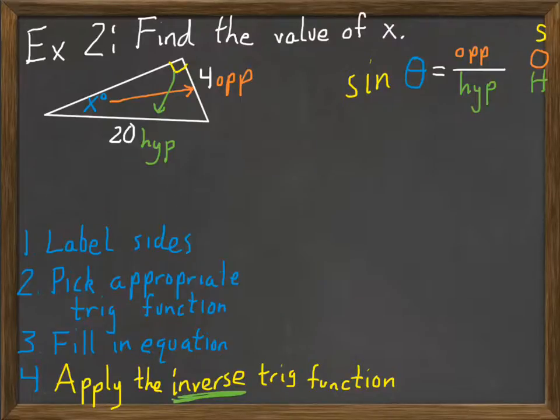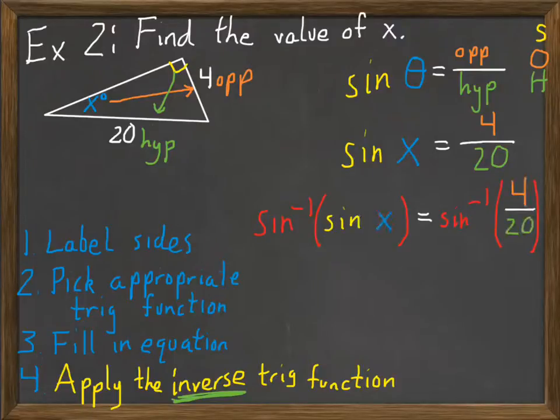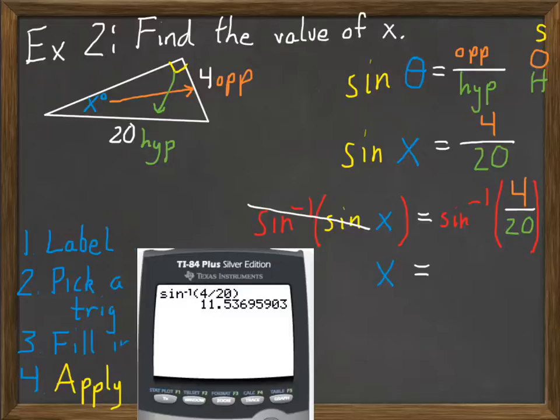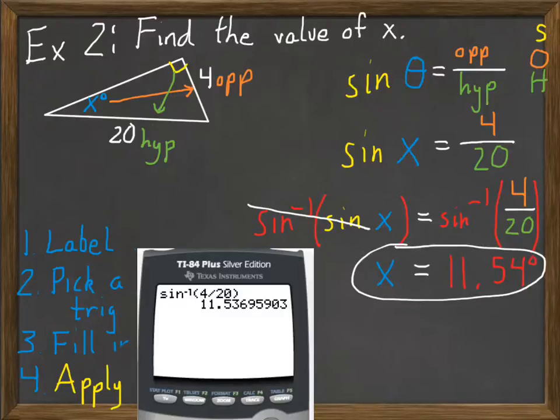Next, I'll fill in the equation in step 3. The angle is x, the opposite is 4, and the hypotenuse is 20. So I have the sine of x equals 4 over 20. I need to know what angle will have a sine that comes out to be 4 over 20. This is where the inverse trig function comes in. So I'll do the inverse sine of both sides. Sine inverse and sine cancel each other, leaving me with just x on the left side. Then I could use my calculator to figure out what sine inverse of 4 over 20 is. The calculator tells me that the sine inverse of 4 over 20 is 11.5369 blah blah blah. So let's round it to 11.54. So the measure of my angle x is 11.54 degrees. That's a small angle, which we would anticipate because the 4 is very short and the 20 is very long.